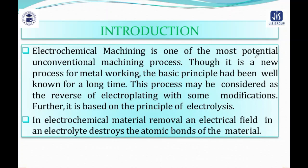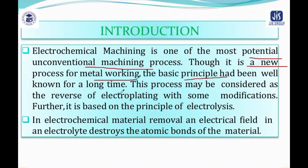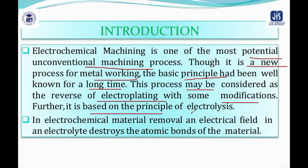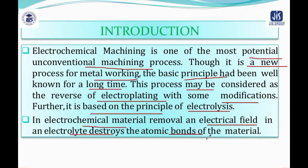Electrochemical machining is a very important and most potential unconventional machining process. Though it is new for metal working, the basic principle has always been known for a long time, and the process may be considered the reverse of electroplating with some modification. The principle is based on electrolysis. In electrochemical material removal, an electric field in an electrolyte destroys the atomic bond of the material.